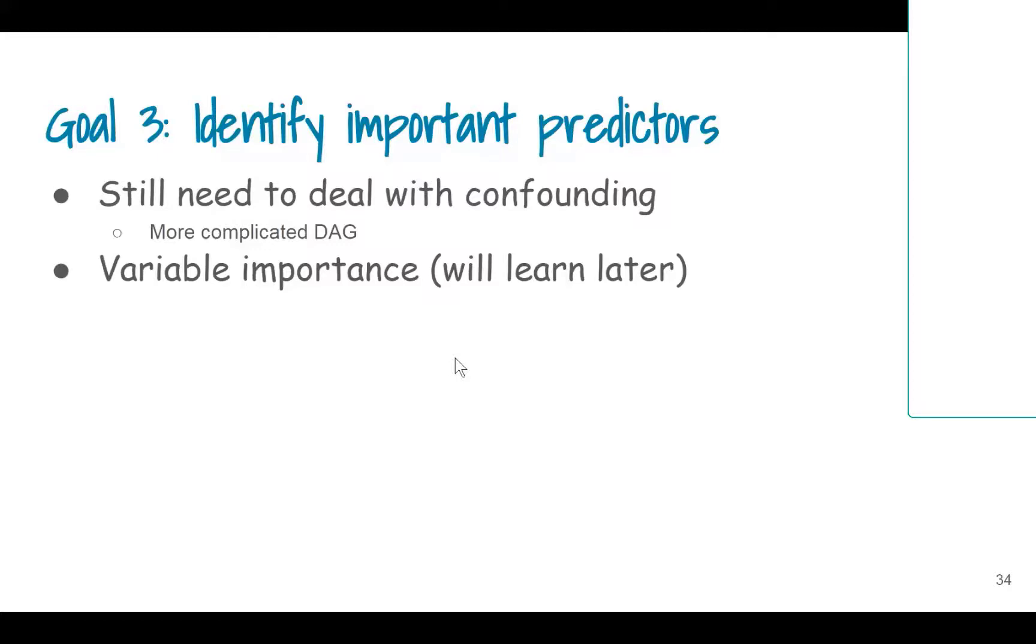All right, so this is the part - remember when I talked about the four different goals? This is the part where I am essentially talking about identifying a number of covariates that are important in explaining the outcome.